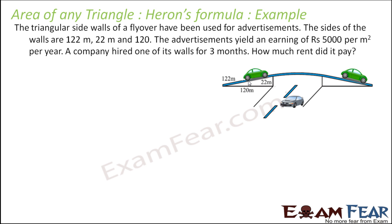The advertisement yields an earning of ₹5000 per meter square per year. Please note this is per year. The company hired one of its walls for three months — how much rent did it pay? We have to find the total rent to be paid if the company plans to advertise in this area.